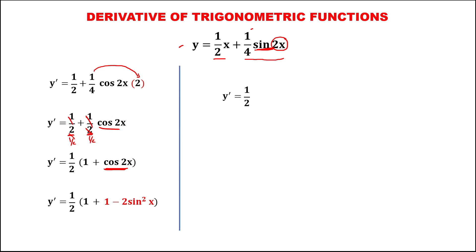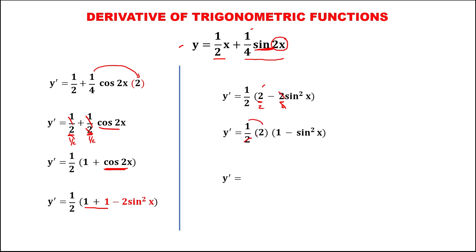Then to simplify, we have one-half times this one plus one, that's two, then minus two sine squared x. Observe that we have this common factor two, so put this two outside, giving one-half times two times one minus sine squared x. This one-half times two is one, and for one minus sine squared x, using the identity that one minus sine squared x equals cosine squared x. Therefore, the derivative for this given function is equal to cosine squared x.